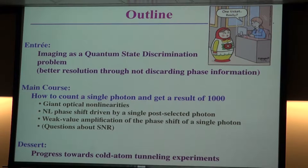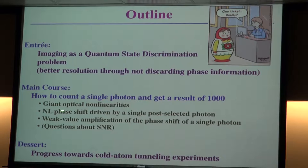The idea is that by thinking about quantum aspects of information, one can come up with new ideas for metrological or imaging applications. In this case, it's really just better resolution through not throwing out the phase information — phase matters. The main course will be this: how to count a single photon. That's really about giant optical nonlinearities, how to get photons to interact with each other. In particular, we observe a nonlinear phase shift driven by a single post-selected photon. Then we'll talk about weak value amplification, where you can make a single photon act like a thousand photons.